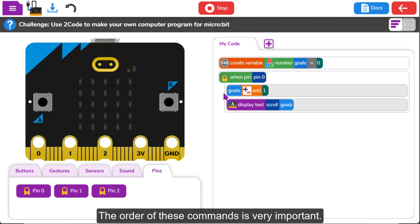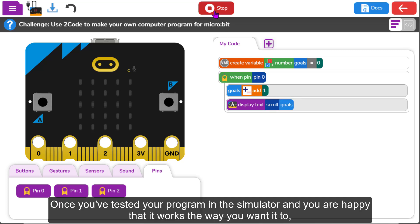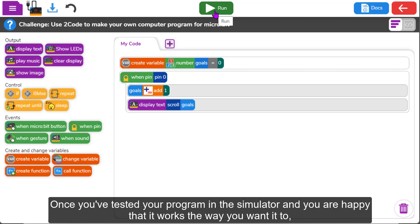The order of these commands is very important. I want the microbit to show the new goal value on the LED display after it's added one more goal. Once you've tested your program in the simulator and you're happy that it works the way you want it to, you are now ready to transfer the code to a microbit.